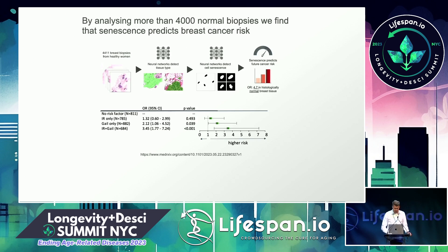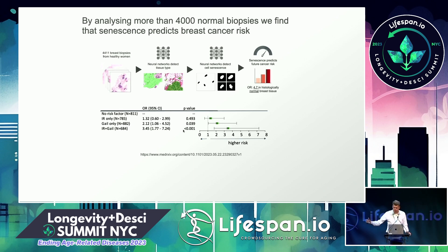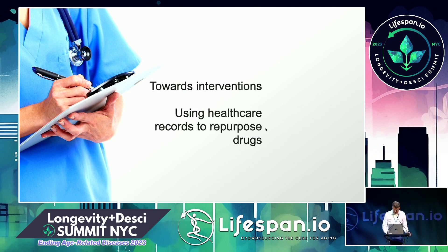We've now applied this to a larger dataset — biopsies from the common tissue bank — looking at whether predicted senescence can predict the development of breast cancer. Combining ionizing radiation-induced senescence with the commonly used Gail score gives a very strong predictor of future cancer risk. This is very important because in the US alone, more than a million biopsies are taken every year, and the majority don't show cancer. Now we can risk-stratify all of these patients.